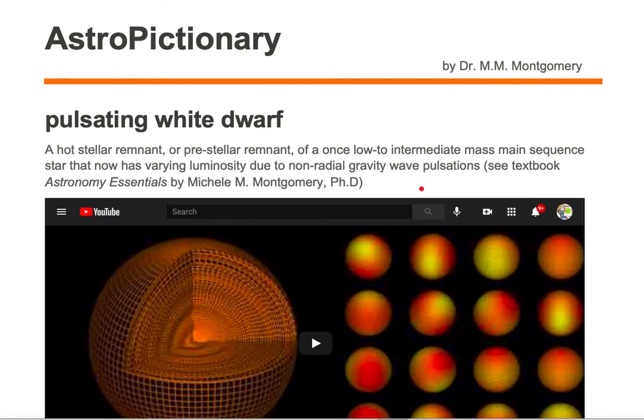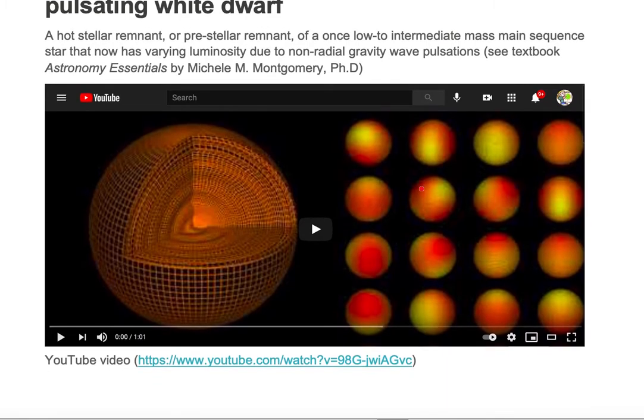Let's take a look at an example of a pulsating white dwarf. It's pulsating at its surface, thereby varying its luminosity due to non-radial gravity wave pulsations.